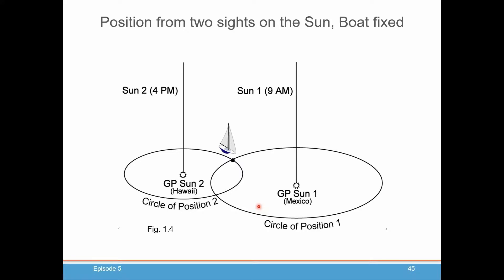If we take two sights while our boat is stationary, say once in the morning, once in the afternoon, the almanac tells us where the sun is at each of those precise moments. Our sextant tells us how far away we are from those GPs. We can create circles of position based on those distances from those GPs, and where they cross is where we are. How do you know you're here or here? That's where your dead reckoning position will come in. Usually these positions are hundreds of miles away from each other. So as long as your dead reckoning position is pretty good, you're not off by hundreds of miles, you'll know exactly which of those two intersecting points you're located at.